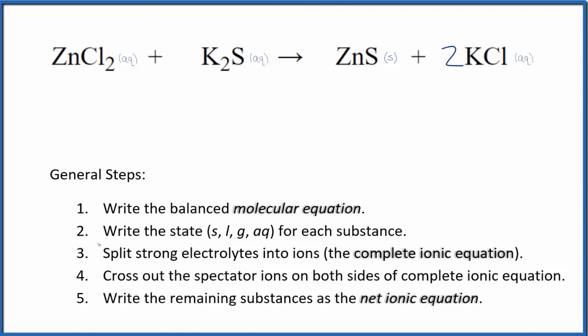Now we can split the strong electrolytes for each substance into their ions. This is called the complete ionic equation. Zinc, that's always 2+. A chloride ion is always 1-, each one of them. So we'll have the zinc ion, Zn2+. And I won't write the states now. Let's do that later. And then two of these chloride ions. That's Cl-.